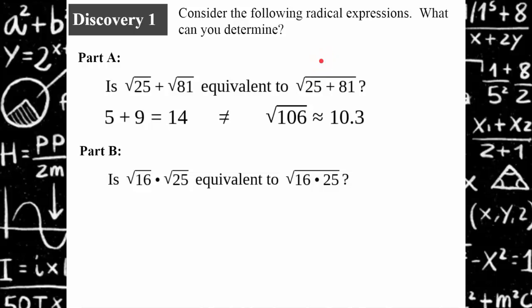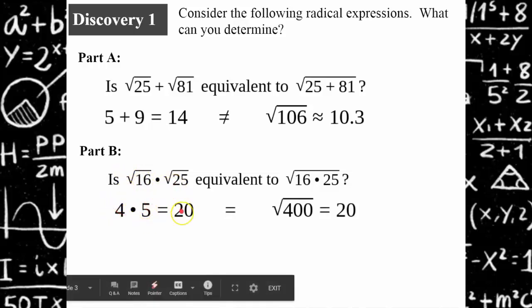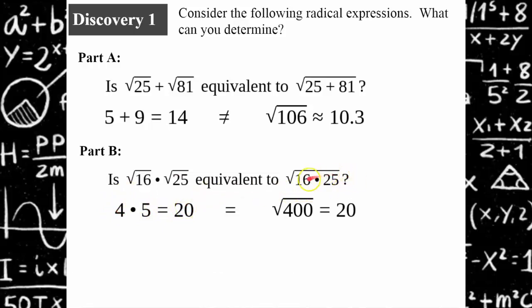Part B asks if the square root of 16 multiplied by the square root of 25 is equivalent to the square root of 16 times 25. The square root of 16 is 4 and the square root of 25 is 5; the product is 20. If we multiply the radicands we get 400, and the square root of 400 is also 20. So these expressions are equivalent. You can multiply radicands and find the square root, but you cannot add radicands — you must simplify first.